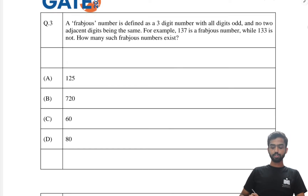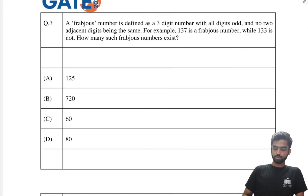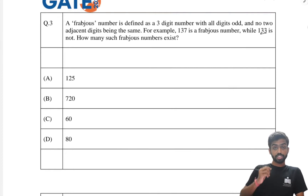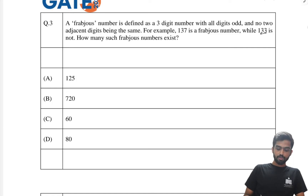Next, a difficult-looking question. A 'fraptious number' is defined as a three-digit number with all digits odd and no two adjacent digits being the same. For example, 137 is a fraptious number, while 133 is not because the two 3s are adjacent. How many fraptious numbers exist?